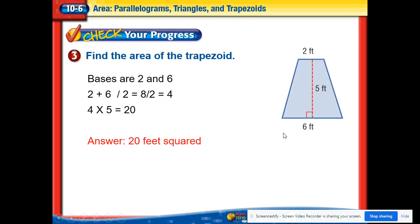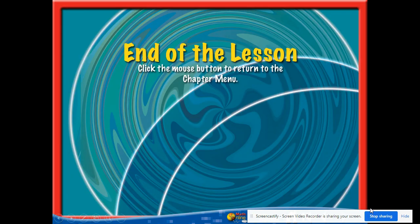Now let's try another one here. Base here is 6 and 2, so the bases are 6 and 2. Add those together to get 8. Divide by 2 is 4. And then we do 4 times 5, which is just 20. So really not too bad, even though the formula looks a little bit worse than what it is. But we do get 20 feet squared. All right, that's what I have for you today.